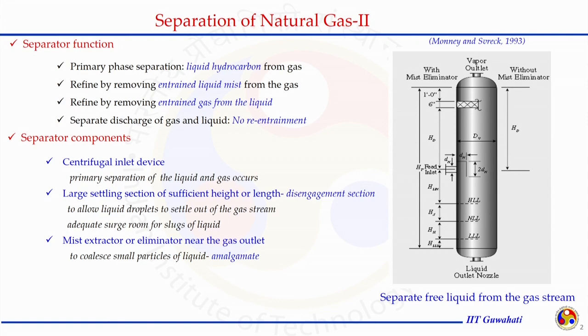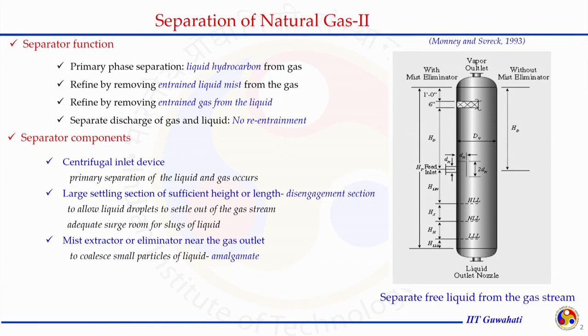To achieve the function of the separator, it should have three components as discussed in the last class. There should be primary separation facilities, which can be achieved by a centrifugal inlet device. As the fluid enters with significant velocity, because of gravity and centrifugal forces, the heavier or larger-size liquid droplets are separated immediately as the fluid enters. In the disengagement section, liquid droplets settle out of the gas stream, and adequate surge room should be available so no remixing occurs.